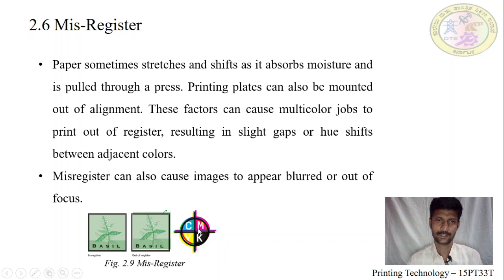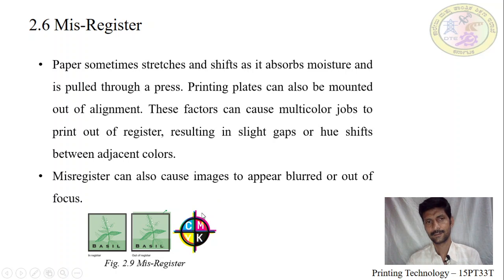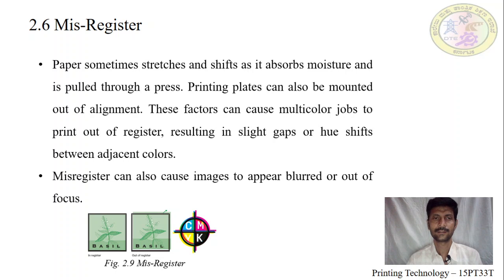This is the registration mark of the four color separations to get this output — Cyan, Magenta, Yellow, and Black. If the printing make-ready is perfectly registered, then we will not get any misalignment or blurred effect.